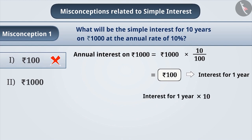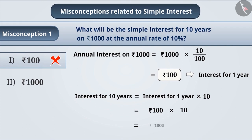To find the correct answer, we have to multiply interest for 1 year with total time to get total simple interest. Since simple interest for 1 year is Rs. 100, then interest for 10 years is equal to 100 × 10, that is Rs. 1000.